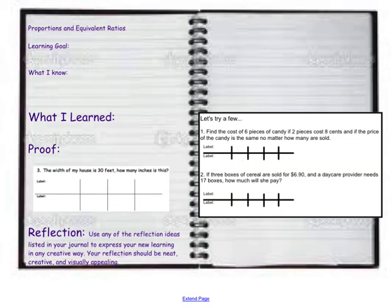Don't forget to do your proof. It's a problem that says the width of my house is 30 feet. So how many inches is this? You're going to have to write yourself a ratio based on what you know about feet compared to inches. And then use that ratio to build upon it and figure out how many inches are in 30 feet.